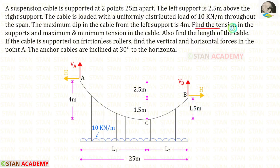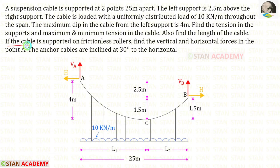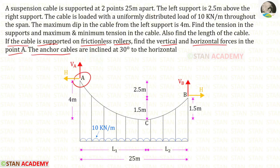We need to find the tension in the supports and the maximum and minimum tension in the cable, and also find the length of the cable. If the cable is supported on frictionless rollers, find the vertical and horizontal forces at point A. The anchor cables are inclined at 30 degrees to the horizontal.